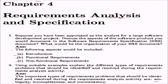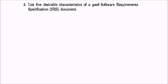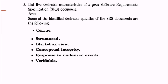Third question: list five desirable characteristics of a good SRS document. It should be concise, well-structured, and provide a black box view — presenting only what the user needs, not how it will be implemented. Then conceptual integrity means the constraints you impose should be conceptual only. Response to undesired events should also be addressed — things that may happen beyond your control should be written in the SRS. Most importantly, it should be verifiable.